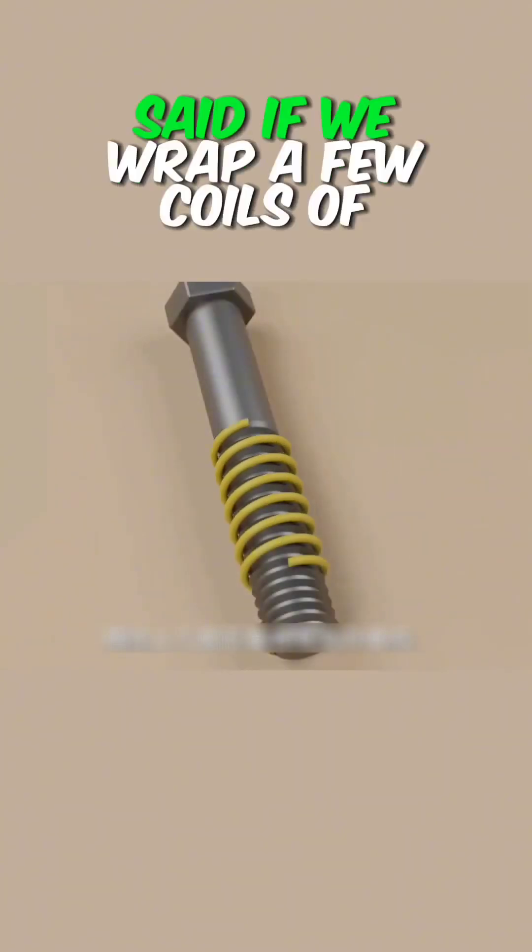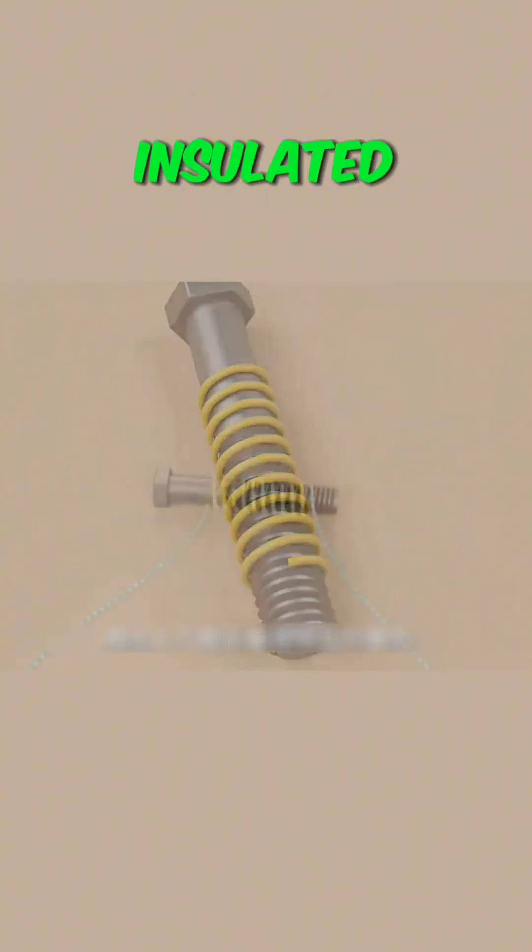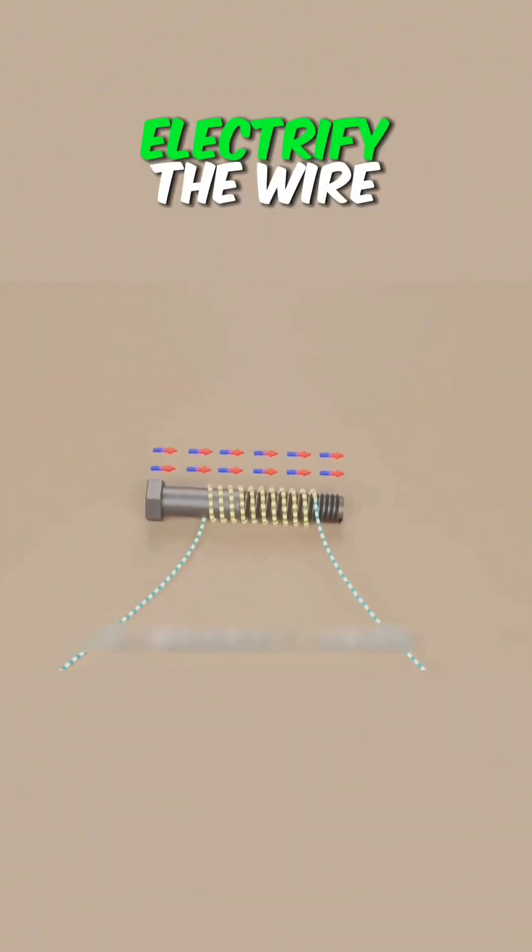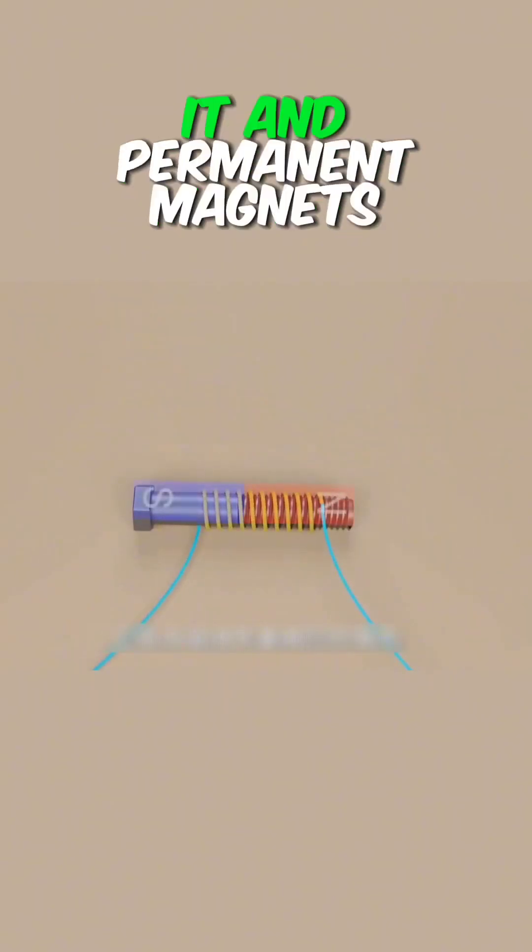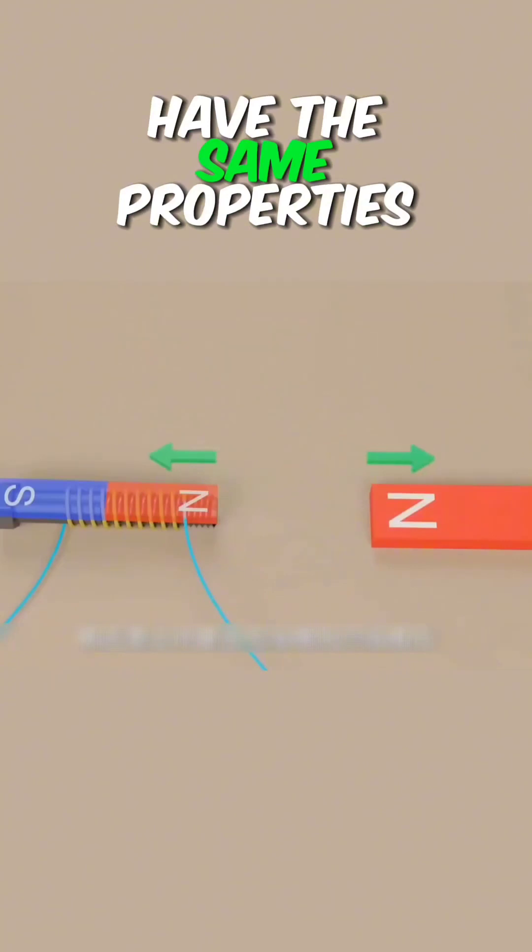Before we talk about brushed motors, if we wrap a few coils of insulated wire on a metal bolt and then electrify the wire, the bolt becomes an electromagnet. It and permanent magnets have the same properties.